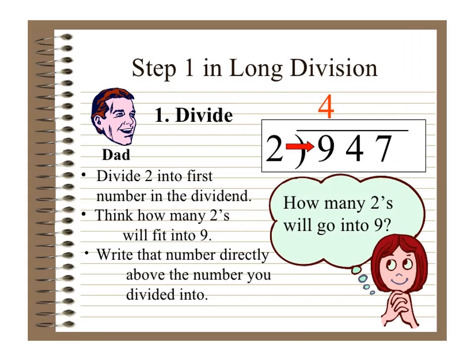Step 1 in long division: divide. So here 947 divided by 2. You have to divide 2 into the first number in the dividend. The first number in the dividend is 9. So 9 divided by 2 — think how many 2s will fit into 9. How many 2s will go into 9? 4. Write the number directly above the number you divided into.